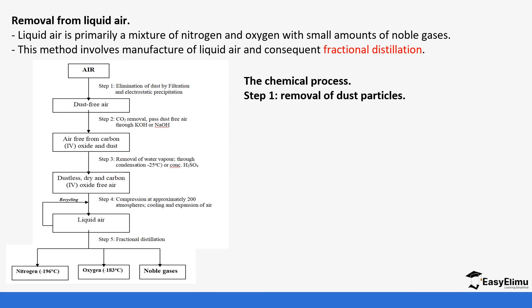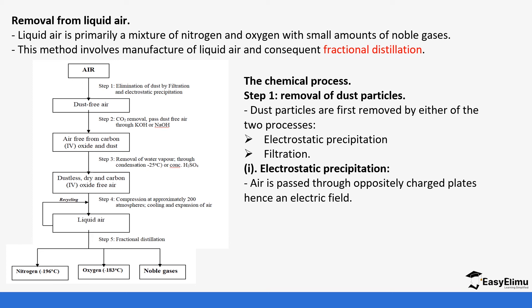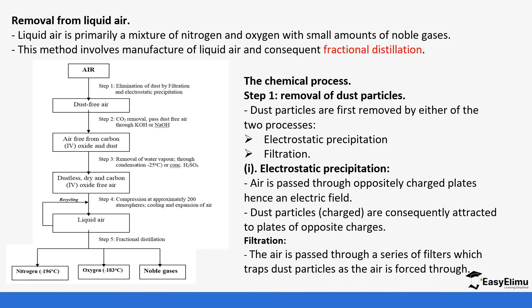The industrial process has several steps. Step one is the removal of dust particles from air, done by two processes. First, electrostatic precipitation: air is passed through oppositely charged plates in an electric field, and the dust particles are attracted to the plates of opposite charge and left behind. Second, filtration: air is passed through a series of filters which trap dust particles as air passes through.